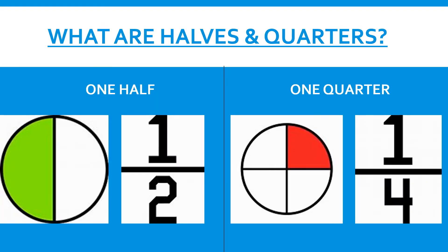What are halves and quarters? One half is when something is split into two equal parts. Here the circle is split into two equal parts. One half of the circle is coloured in green.